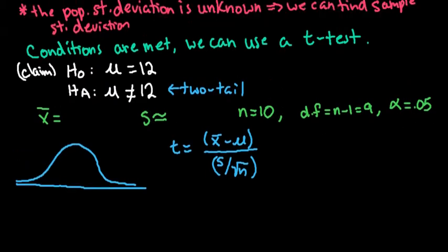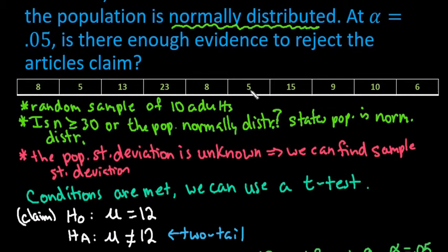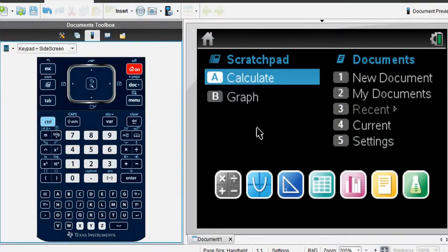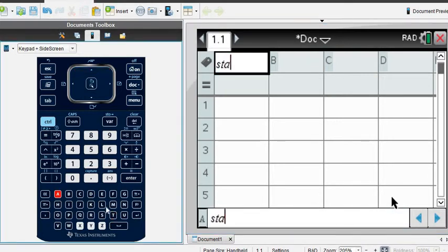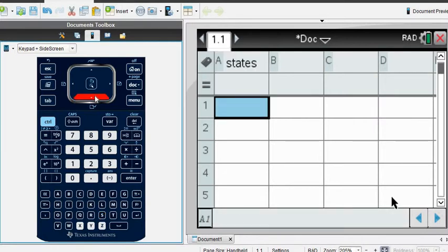In order to use this formula, we have to find x bar and s. Let's grab our calculator. We're going to open up a spreadsheet screen and enter this data. I have all the numbers written down on my paper. It is important to name the variable, so I'm just going to name it states because we're talking about the states visited.